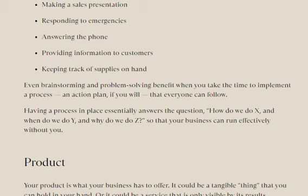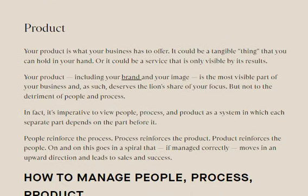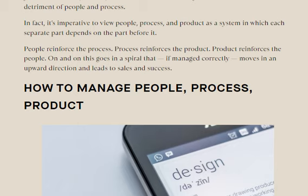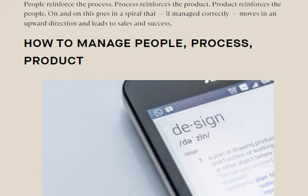Product — your product is what your business has to offer. It could be a tangible thing you can hold in your hand, or it could be a service that is only visible by its result. Your product, including your brand and your image, is the most visible part of your business and deserves a large share of your focus. People reinforce the process, process reinforces the product, product reinforces the people — and on it goes in a spiral that, if managed correctly, moves in an upward direction and leads to success.